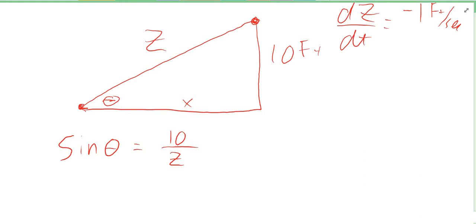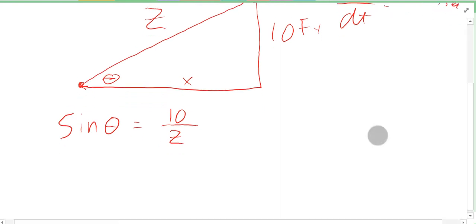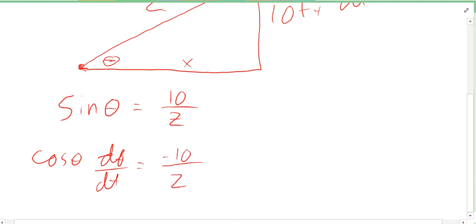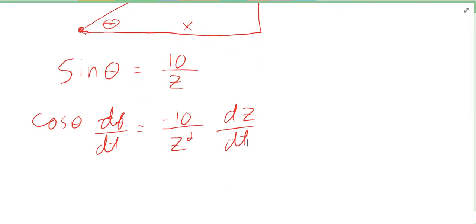When we derive this, which we need to do to get our dθ/dt in here, we get cosine theta dθ/dt equals negative 10 over Z squared dZ/dt. Again, we see this: a number over the variable to the first power becomes negative the numerator over the variable squared.